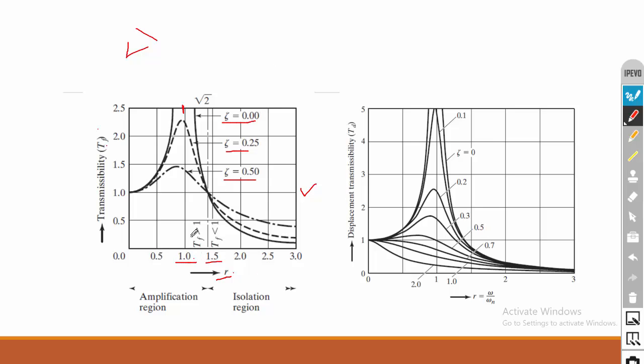When r equals 1, that is at resonance, the transmissibility ratio is very high, meaning the generated force is amplified and transmitted to the foundation. For example, if the transmissibility ratio is 2 and 100 N of force is generated, then 200 N of force will be transmitted to the foundation. For the isolated system, we must always keep the r value greater than 1.5.